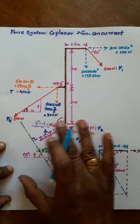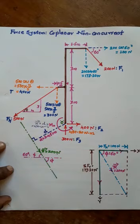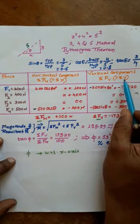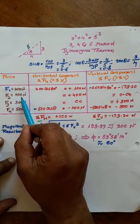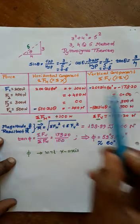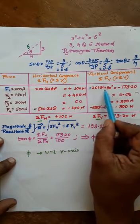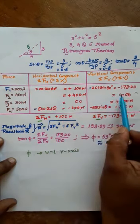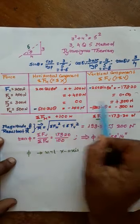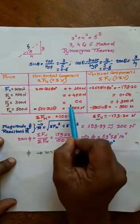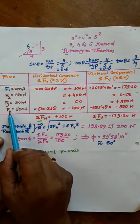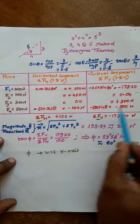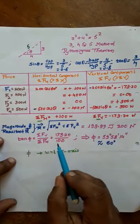We transfer all forces into a tabular column with columns: Force, Horizontal Component, Vertical Component. Forces are F1=200N, F2=400N, F3=300N, F4=500N. F1: +100, −173.20. F2: positive x-axis. F3 (400N) acts in the third quadrant: −400 cos θ = −400 N, −300 sin θ = −300 N. We then compute the algebraic summations ΣFH and ΣFV.